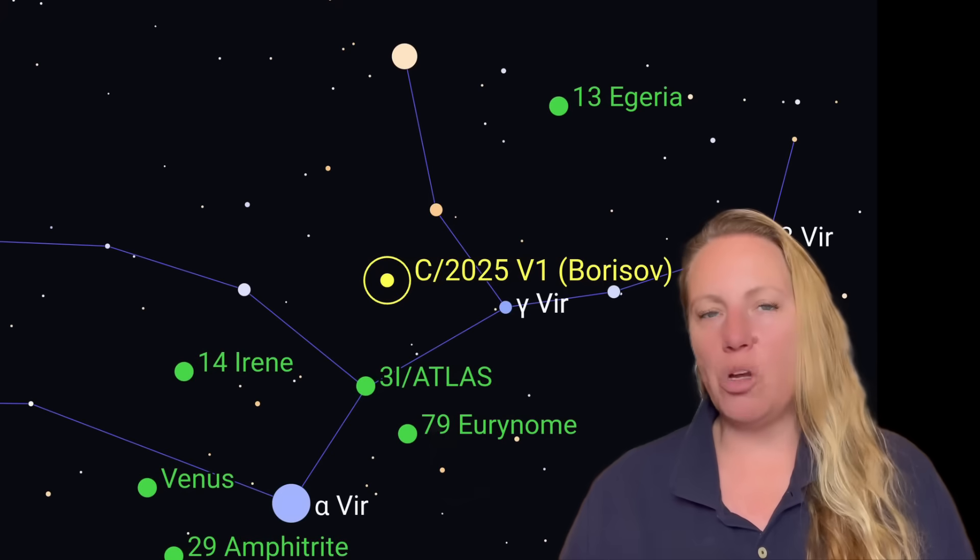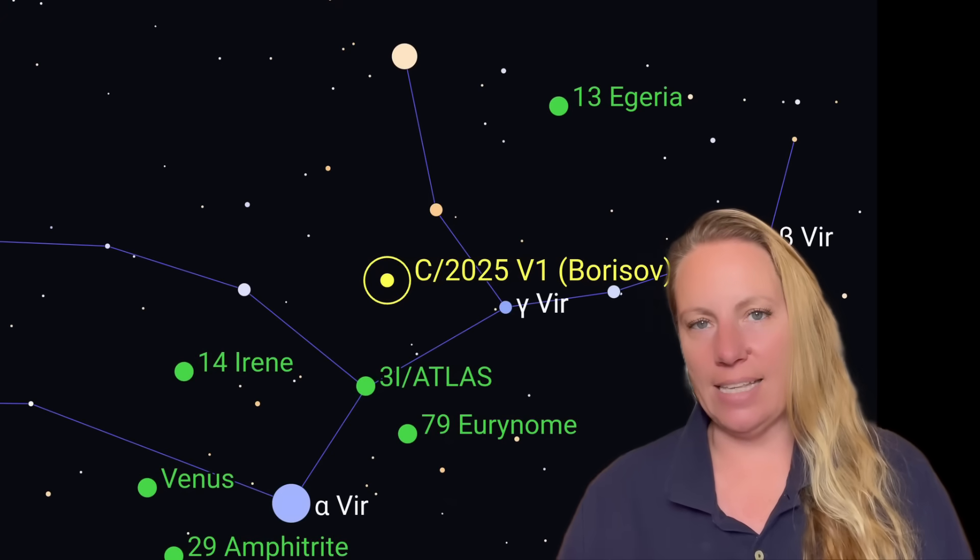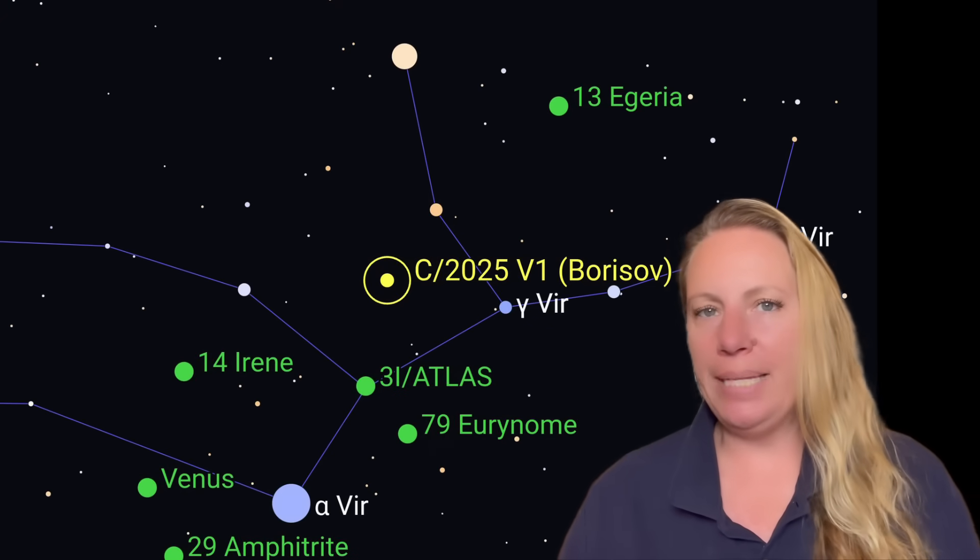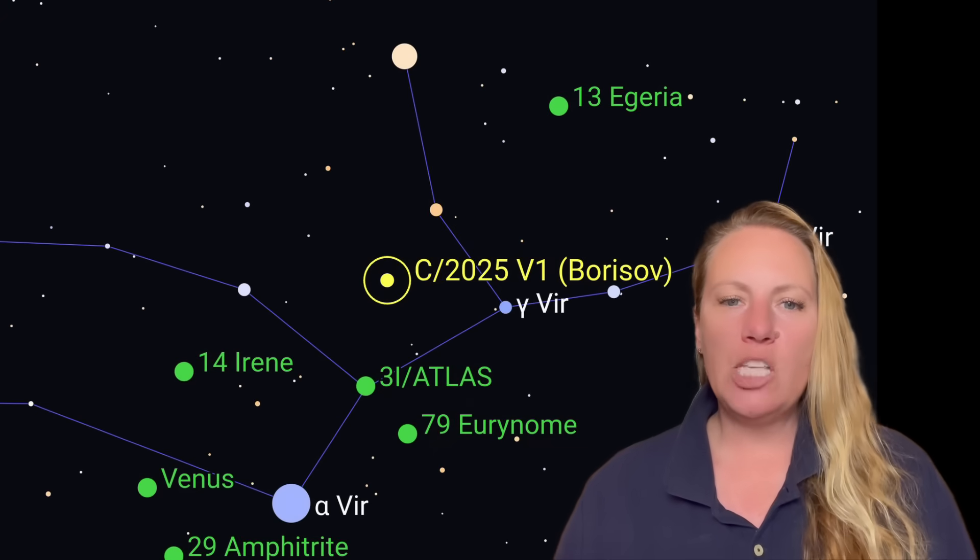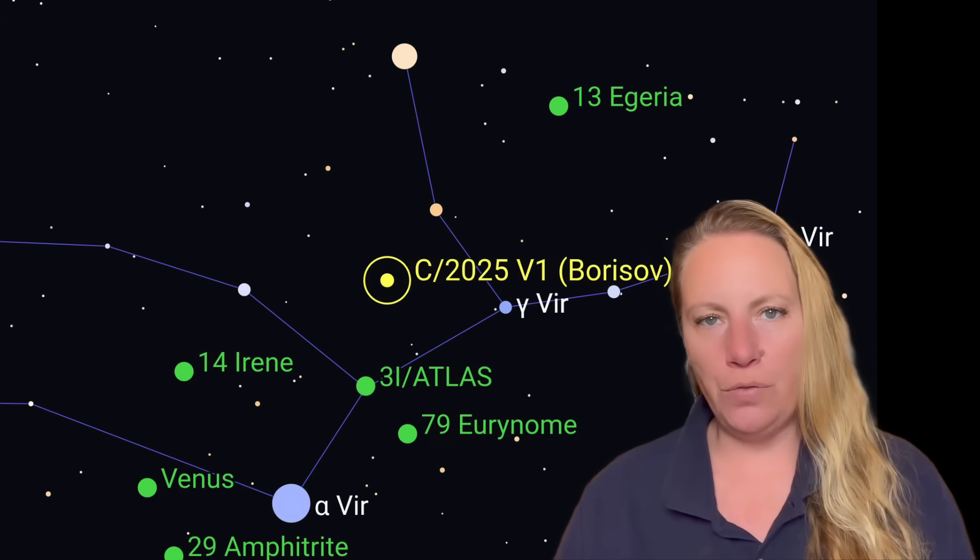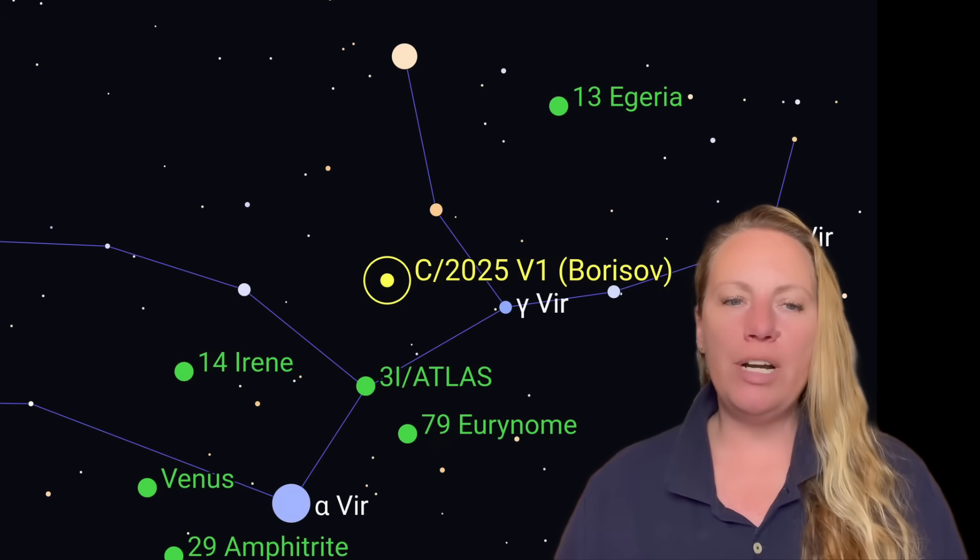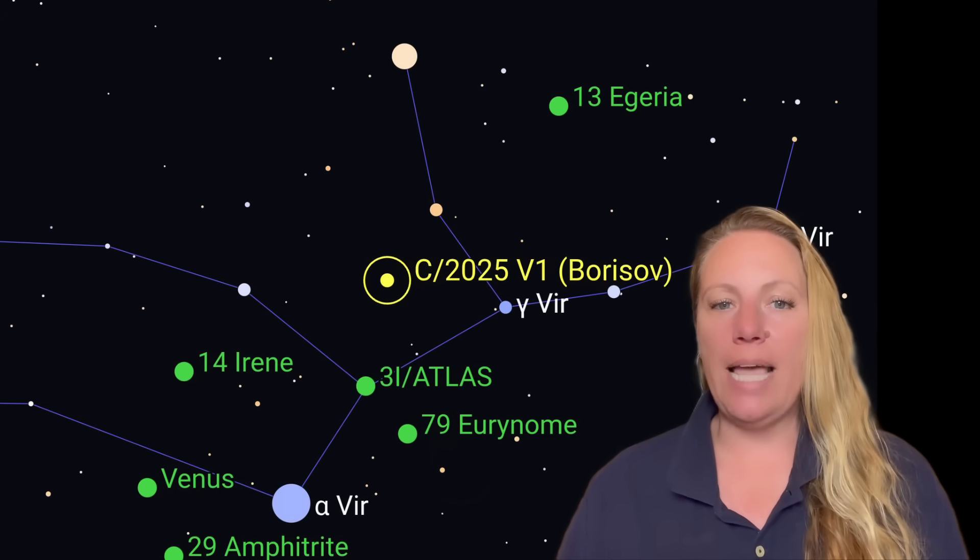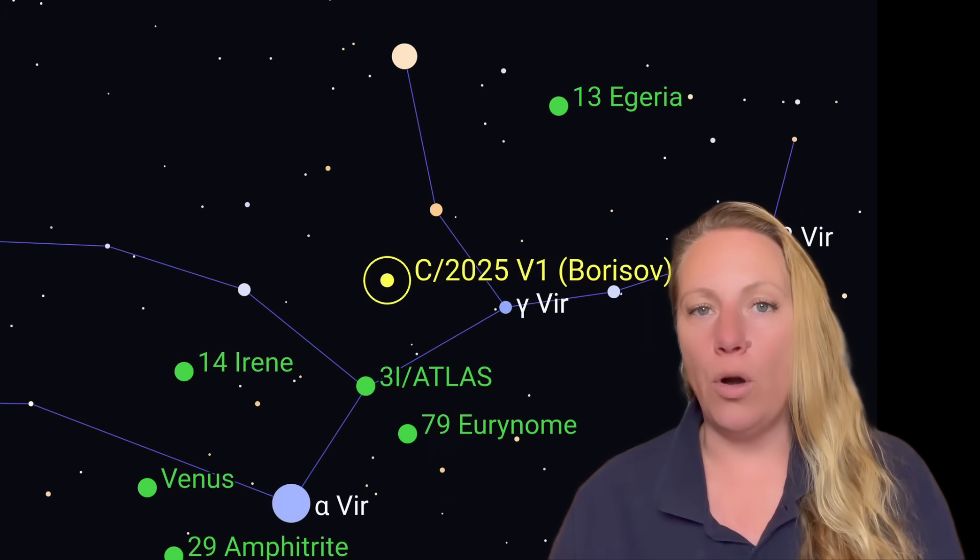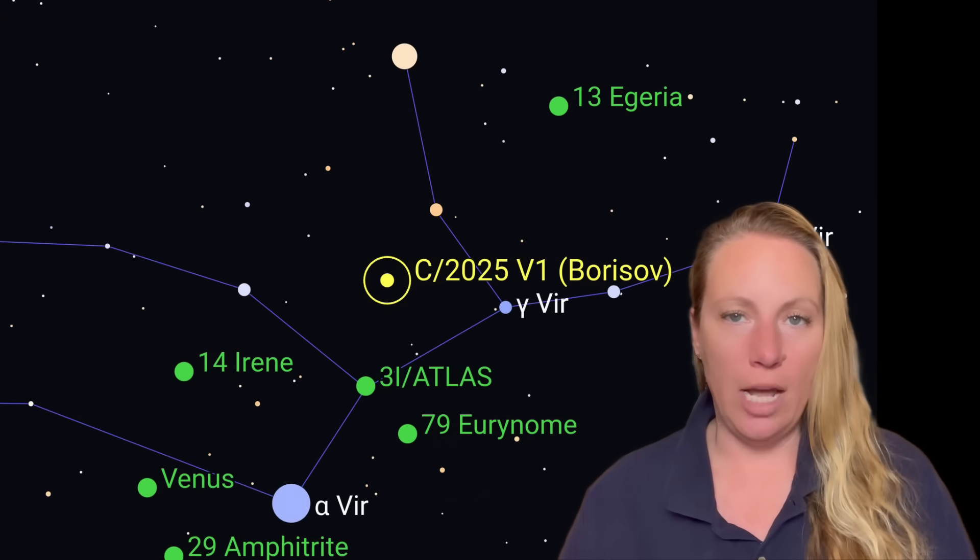Scientists have called it C/2025 V1 (Borisov), but it's not related to 3i/ATLAS. It's probably not coming from the same area like 3i/ATLAS. So the scientists have now confirmed that Borisov originates within our own solar system and that it most likely came from the distant Oort cloud. So not like 3i/ATLAS.